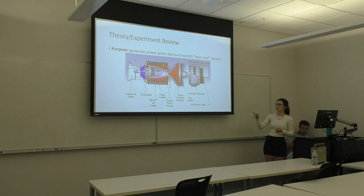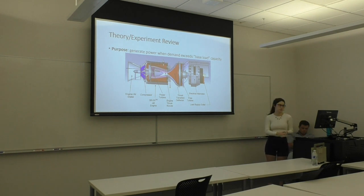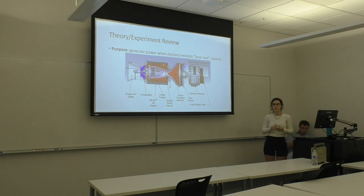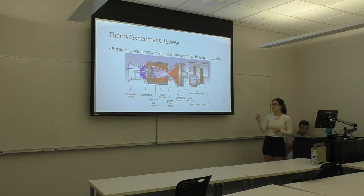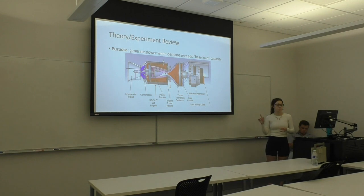For a normal jet engine, one of the turbines would just be generating a thrust force. But in our case, this jet engine is actually used to generate electricity, not thrust. So it goes through a thrust transition deflector, which is connected to the free turbine, which ultimately spins a rotor inside of a generator to create electricity.